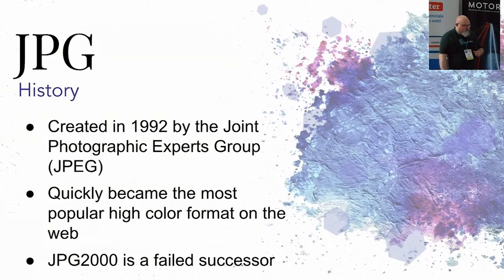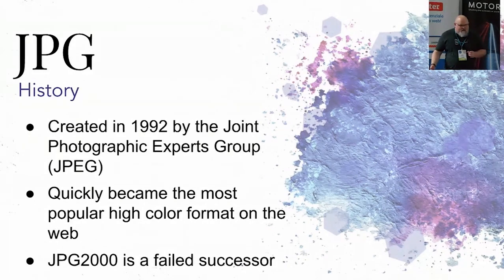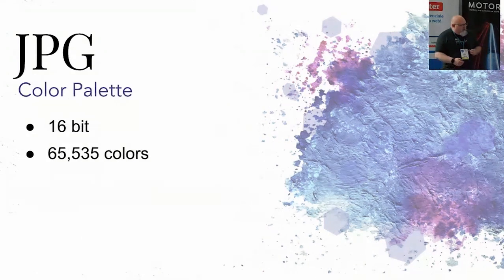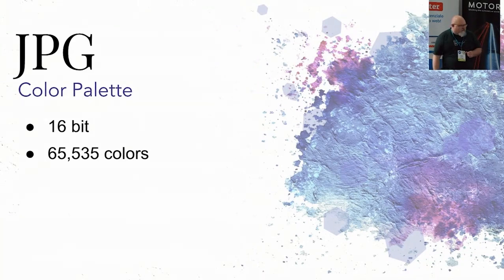JPEG was created in 1992 by the Joint Photographic Experts Group. There was another one that made movies called MPEG. It quickly became the most popular high-color format on the web. They realized the flaws in the late 90s and started making JPEG 2000, which never really took off — it still works in browsers but nobody knows what it is. It has a 16-bit color palette with 65,000 colors. This came right after GIF and everybody went: now I can finally put photographs on the web and not have them look terrible.